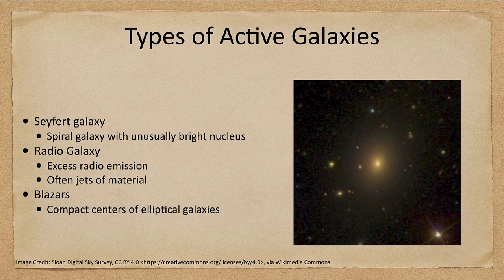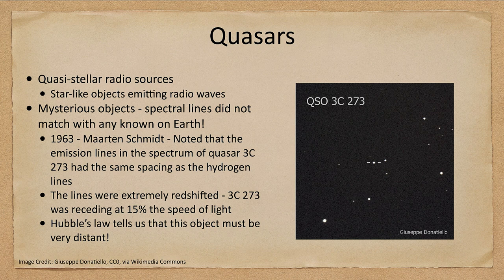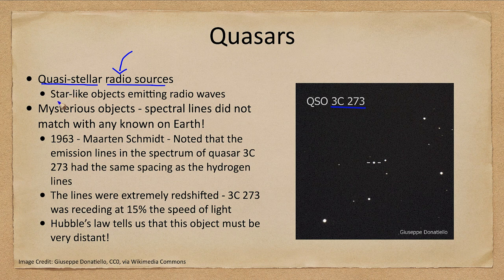One type we mentioned at the beginning would be quasars. Let's look at an example — this is the quasar known as 3C273. Quasars are what we call quasi-stellar radio sources, often now called QSOs because we find some that are not specifically radio sources. This is how they were first identified. They are star-like objects that just look like a star in the sky, but they're emitting radio waves, which most stars do not do.